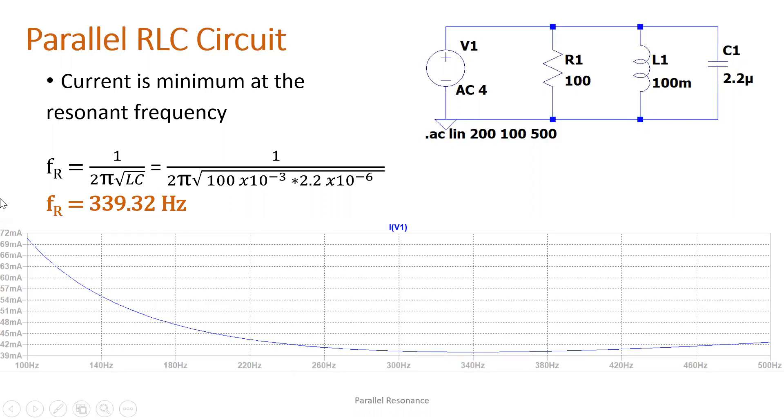At this graph, so this is the graph of the current. Total current. So really, it's hard to see where is the minimum. So we can just have the measurement. So this is the simulation measurement. At 339.99 hertz, we have the value 40 milliampere. So almost equal to the one computed, right? Resonant frequency, computation.